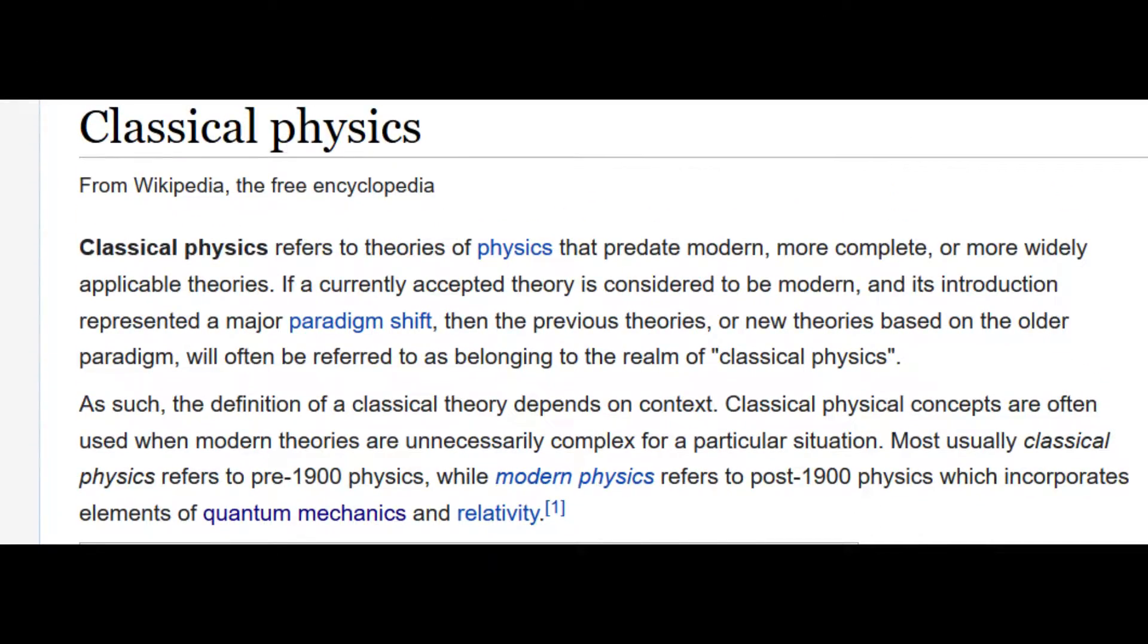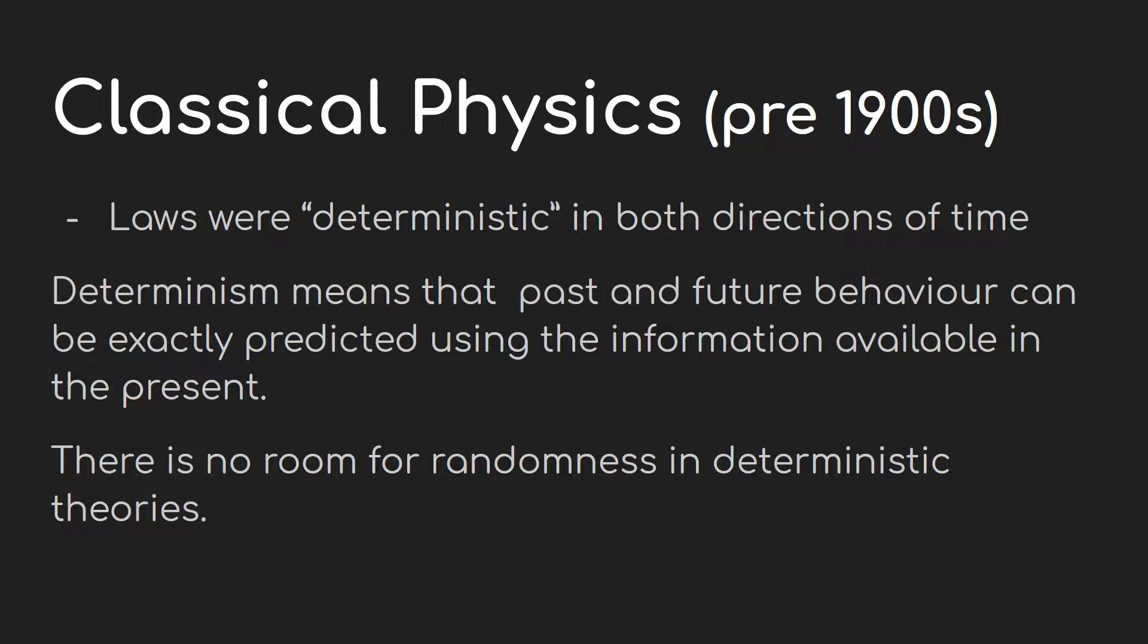Now let's dig a little deeper into the topic. During the period of classical physics, that is before the 20th century, the situation appeared to be quite simple. In classical physics, all laws were deterministic into the past as well as into the future.